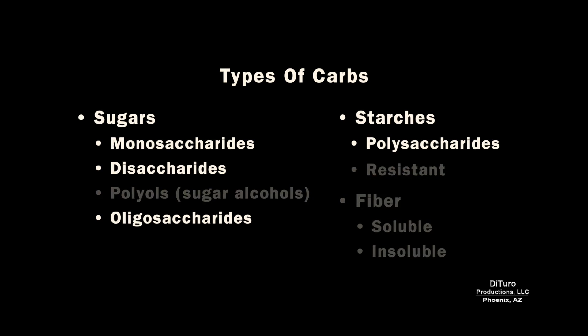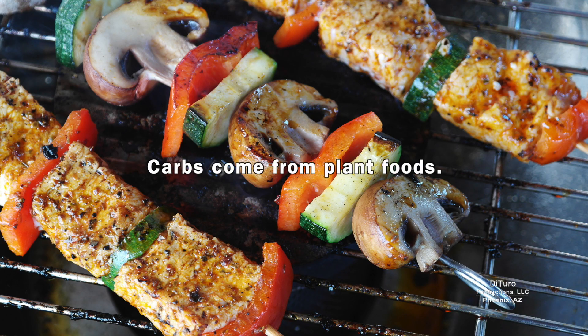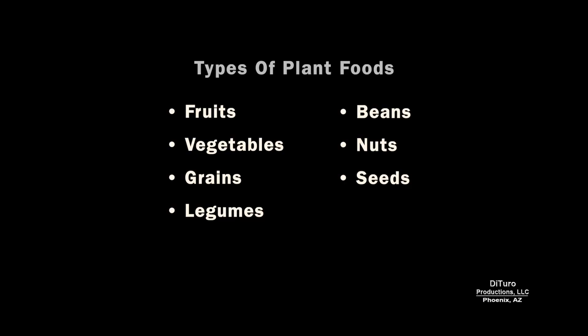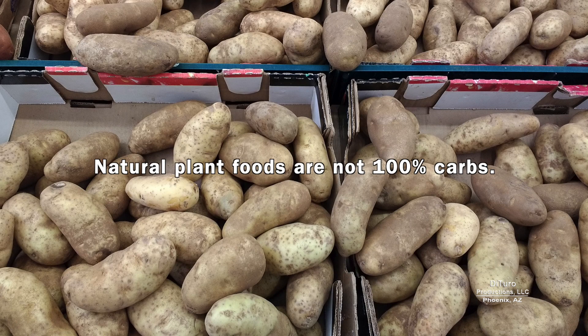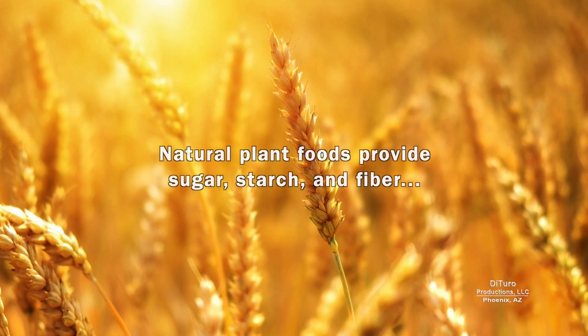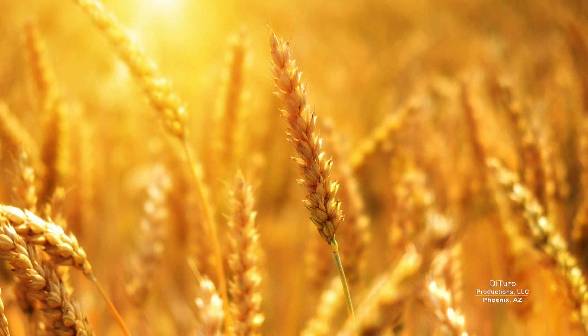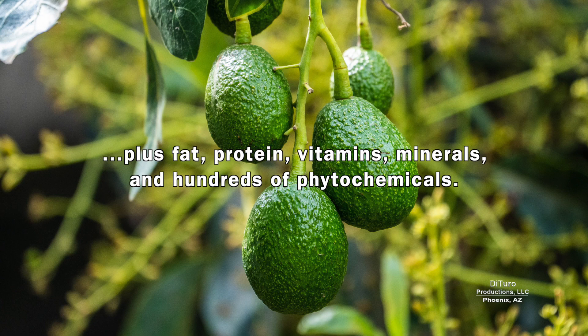Most diets limit or ban the saccharides. Carbs come from plant foods. They include fruit, vegetables, grains, legumes, beans, nuts, and seeds. Natural plant foods are not 100% carbs. Natural plant foods provide sugar, starch, and fiber, plus fat, protein, vitamins, minerals, and hundreds of phytochemicals.